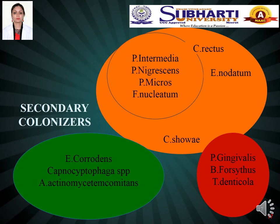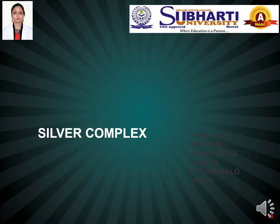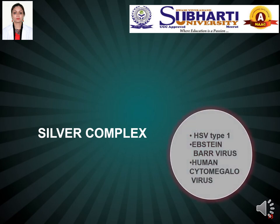Bleeding on probing — that is why the name red has been given to this complex. Apart from those six complexes discussed, there is another complex: the silver complex, given by Slots in the year 2003. This is the viral complex, as it was found that periodontal diseases are not only caused by bacteria but also have a viral etiology. The silver complex consists of viruses like herpes simplex type 1 virus, Epstein-Barr virus and cytomegalovirus.